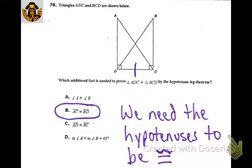To prove these triangles congruent using HL, we need a hypotenuse and a leg. The side they're sharing would be congruent — that's considered a leg. So we would still need the hypotenuse for each of them.